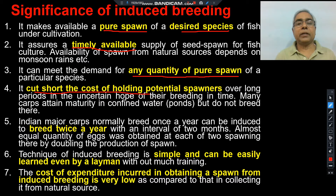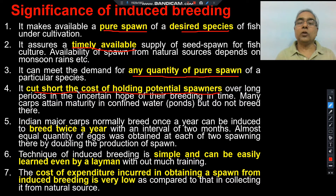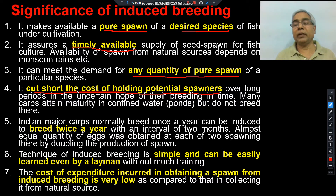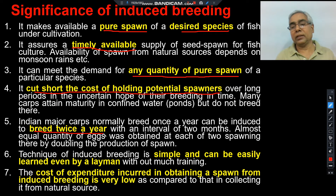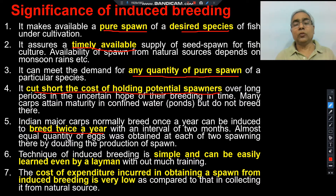Fourthly, the total time period for holding potential spawners — brood fishes — in the pond can be greatly reduced. The longer we need to culture these brooders for breeding, the more we have to feed, maintain, and rear them under proper environmental conditions, bearing certain costs. By induced breeding, we reduce this holding period and cost. Fifthly, we can make Indian major carps breed twice a year — we can force them to breed two times in one year — whereas in natural conditions they breed only once per year, effectively doubling the fish seed quantity we can obtain.